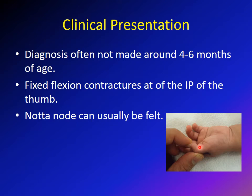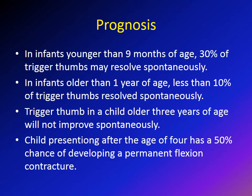Again, the pathology is not at the interphalangeal joint — the pathology is at the level of the metacarpophalangeal joint, with a mismatch between the A1 pulley and the flexor pollicis longus tendon. Usually there is a Notta's nodule in the flexor pollicis longus tendon that can be felt in this case.